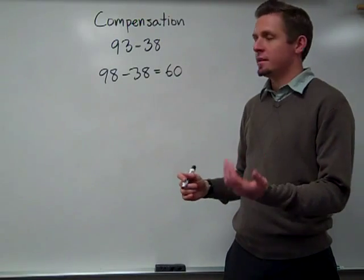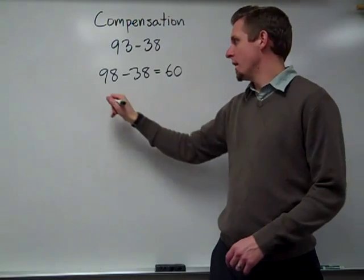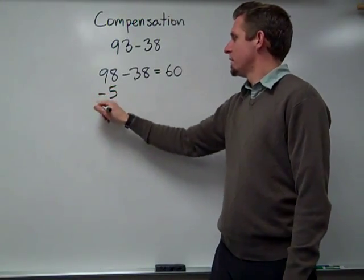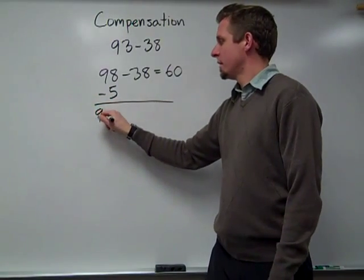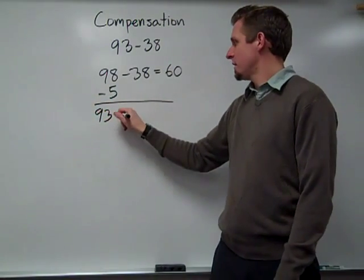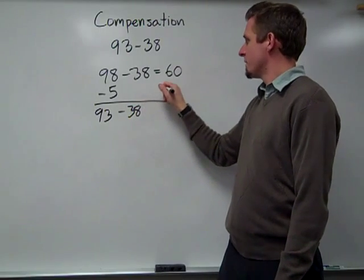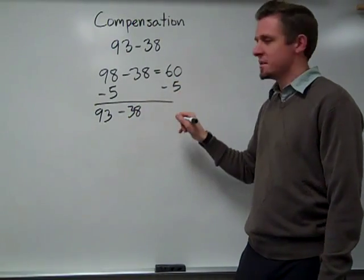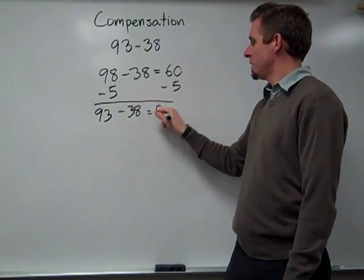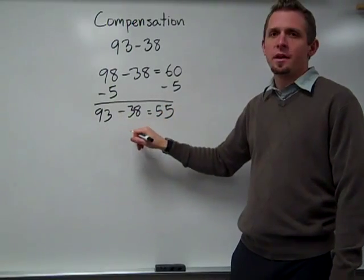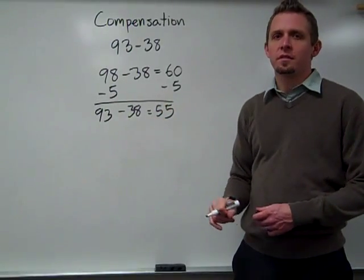Well, I added 5 to get to 98, so now I need to take that 5 away. So if I take the 5 away, that will show me that that's 93 minus the 38. So then I have to take away the 5 from the 60 as well, which would give me my answer 55. So 93 minus 38 equals 55 using compensation.